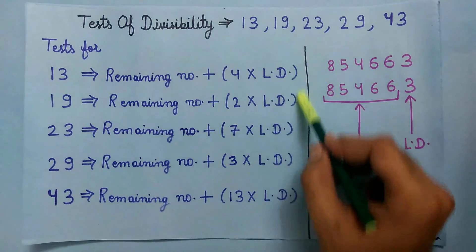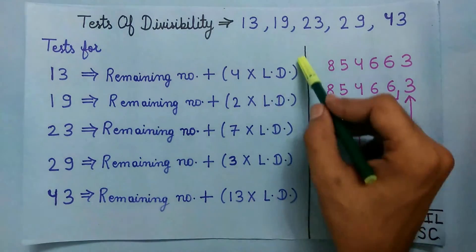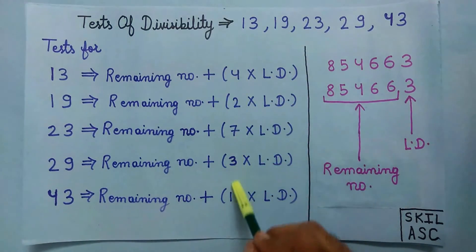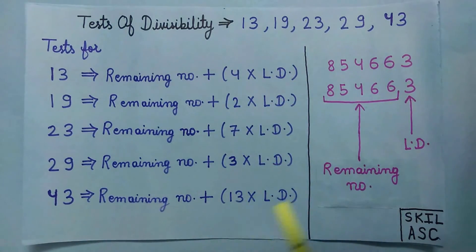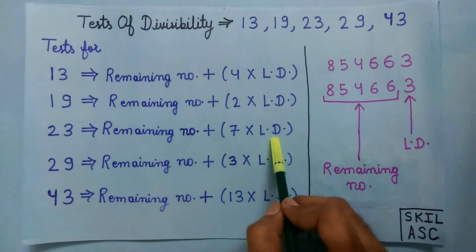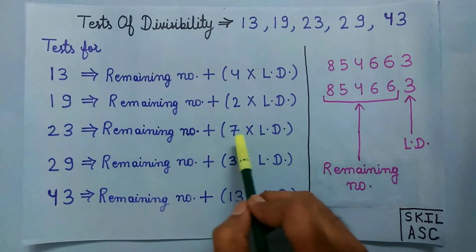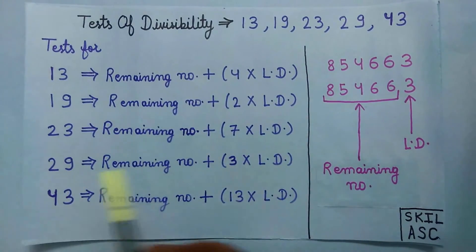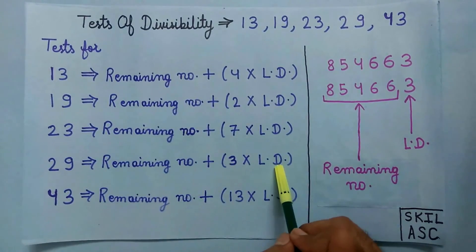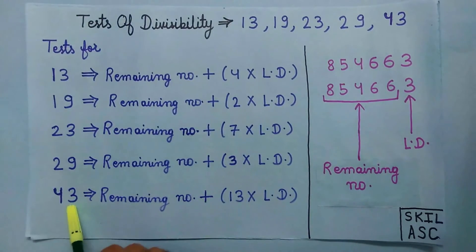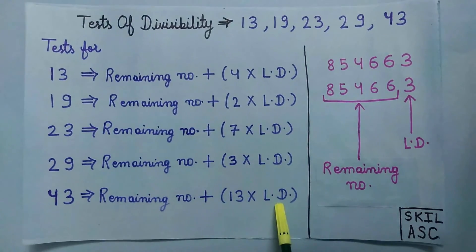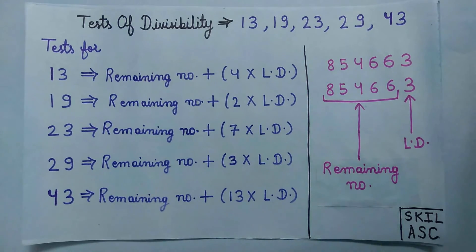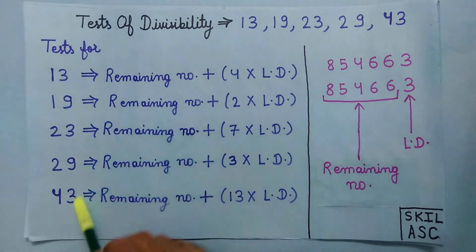For all these numbers the method is the same — only the multiplier changes. For 23, multiply the last digit by 7. For 29, multiply the last digit by 3. And for 43, multiply the last digit by 13. To better understand this, let's take an example for each of these numbers.